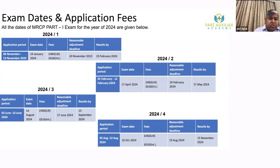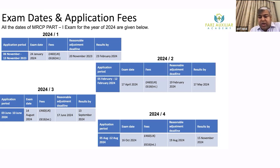Diet 3 is in August. The application period is 3rd June to 10th June, fees are the same, the reasonable adjustment deadline is 17th June, and results are published 13th September. Diet 4 is in October. The application period is 5th August to 12th August — everywhere you get 7 days for the application period. Fees are more or less the same, and the result for the October diet is published 15th November.